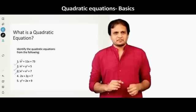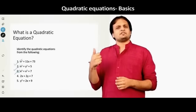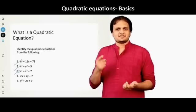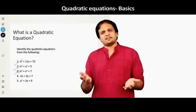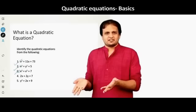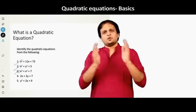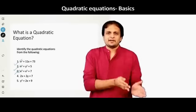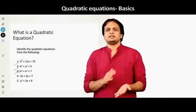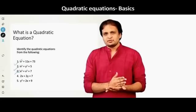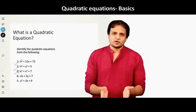Fourth one, it says 2x. So what is the power of x here? 1. x raised to 1 plus 2y. Again, what is the power of y here? 1 plus 7. So if you look at the whole term together, 2x plus 2y plus 7, the highest power that we are getting here is 1. So highest power is not 2. Hence, it is not a quadratic.